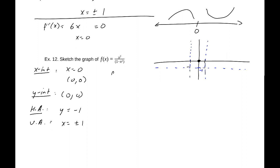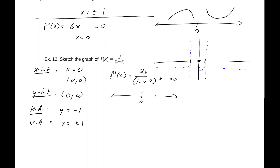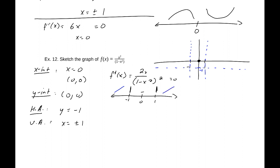Now for the first derivative — skipping some algebra — by the quotient rule it ends up being 2x / (1 - x²)². On the sign diagram, the critical points are at x = 0 (where it equals zero) and at x = ±1 (where it is undefined, vertical tangents). Testing those intervals: increasing to the left of -1, increasing between -1 and 0, decreasing between 0 and 1, and increasing to the right of 1.